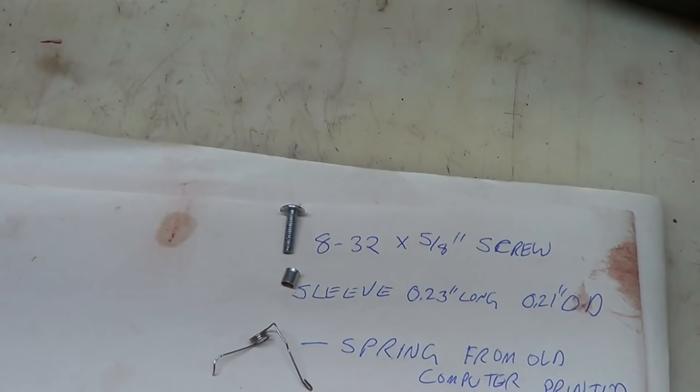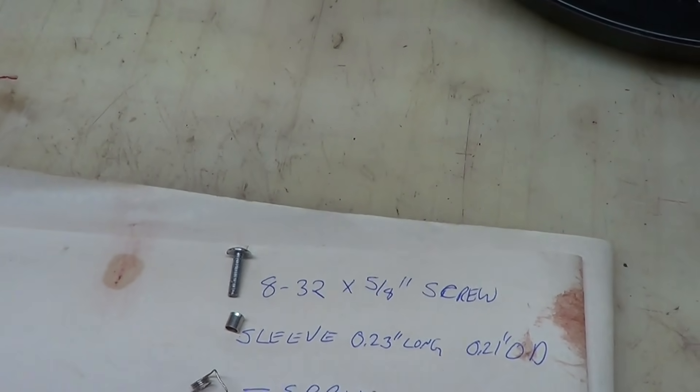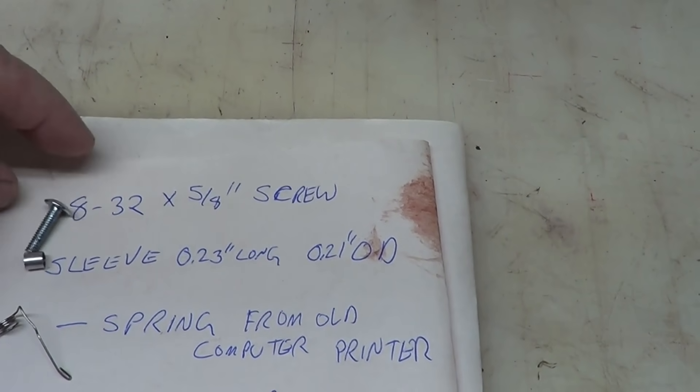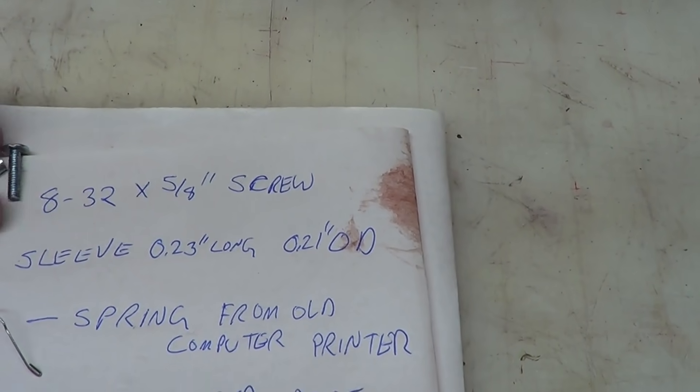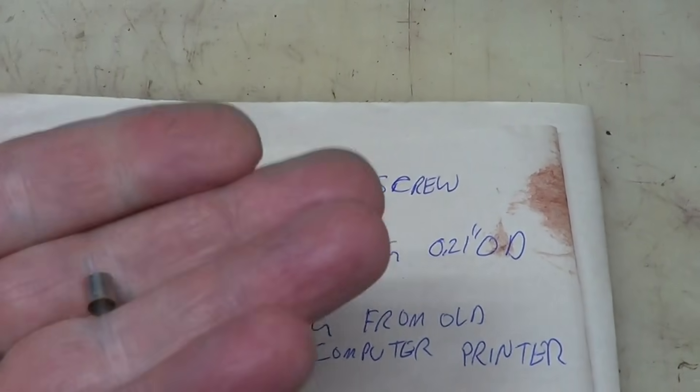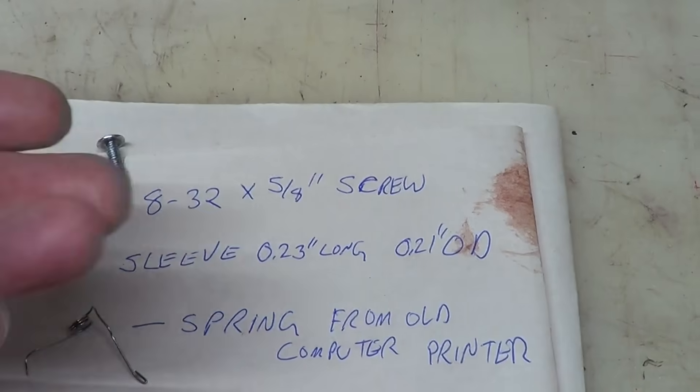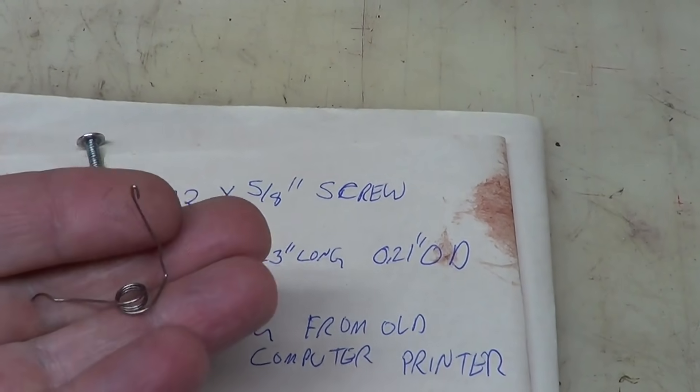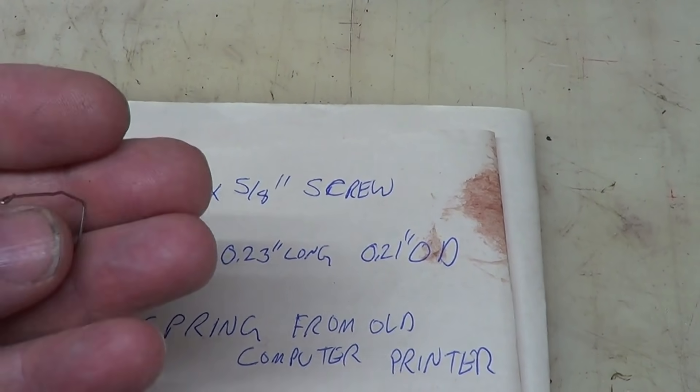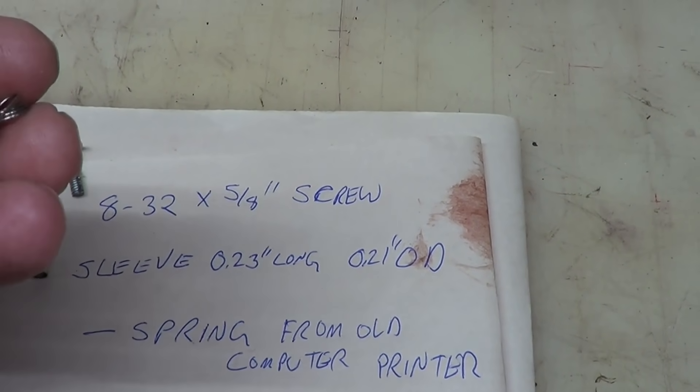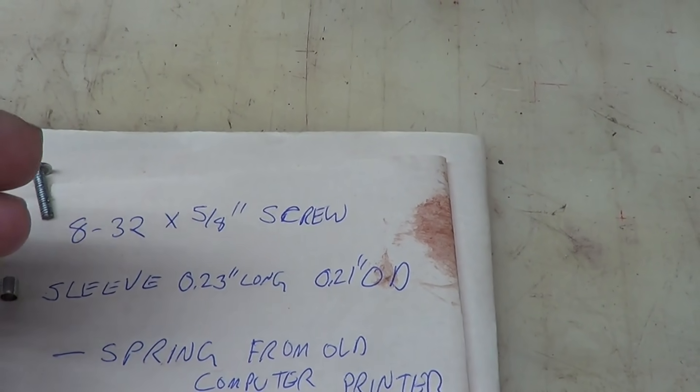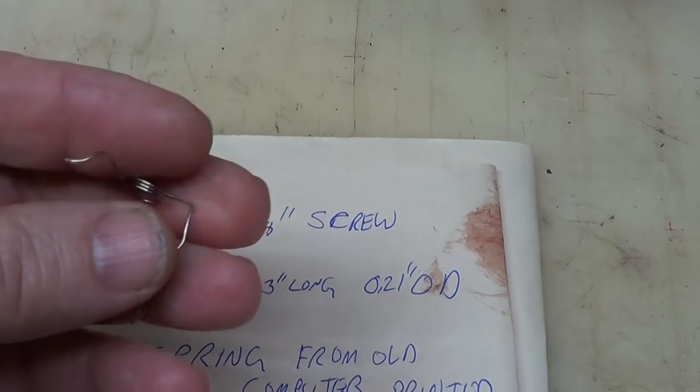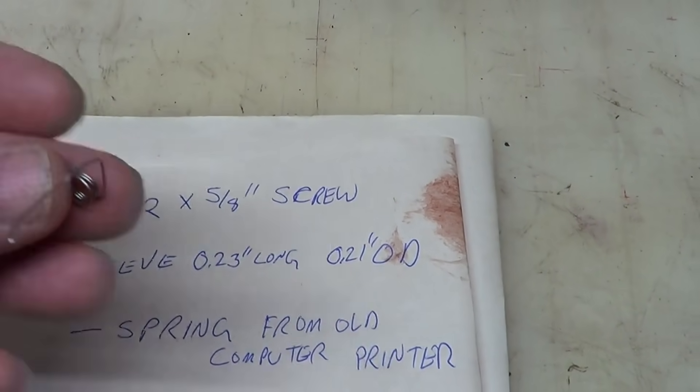These are the parts that control the primers going into the rotating station. 8-32 by 5/8 inch screw. Just an ordinary sleeve you can make out of a piece of pipe. The dimensions are there. This is a spring I found out of an old computer printer. So you'll just have to look around for that. Or if you go on to the YouTube, This Old Tony, he has a whole set of making your own springs if you wanted to do that.